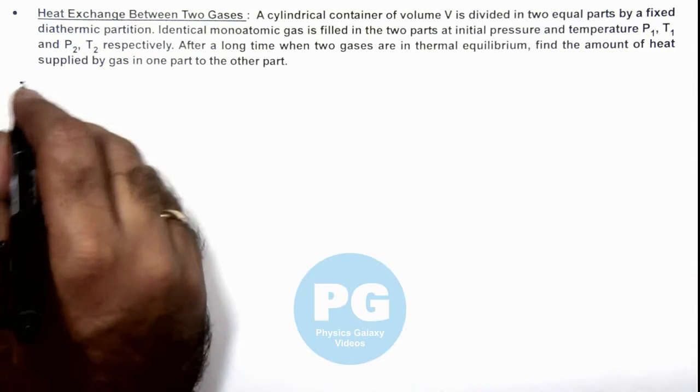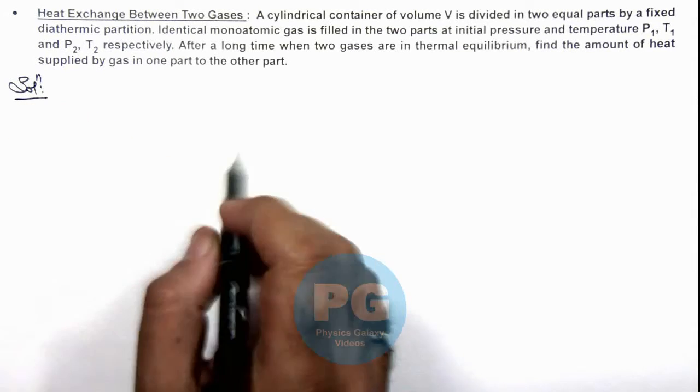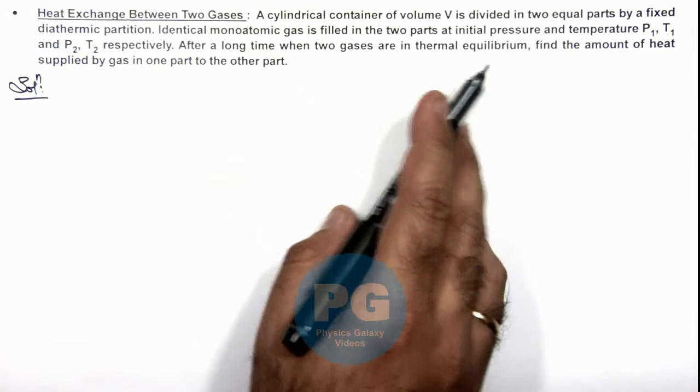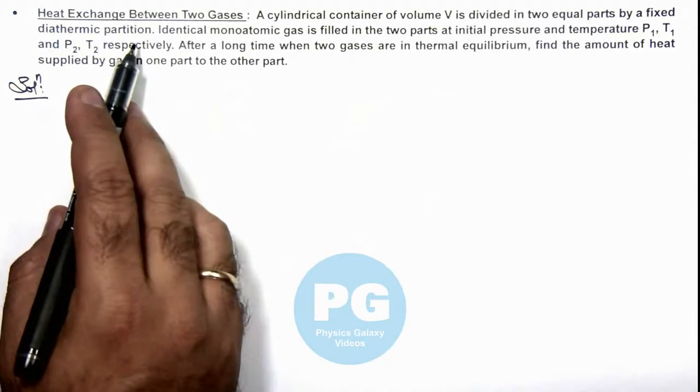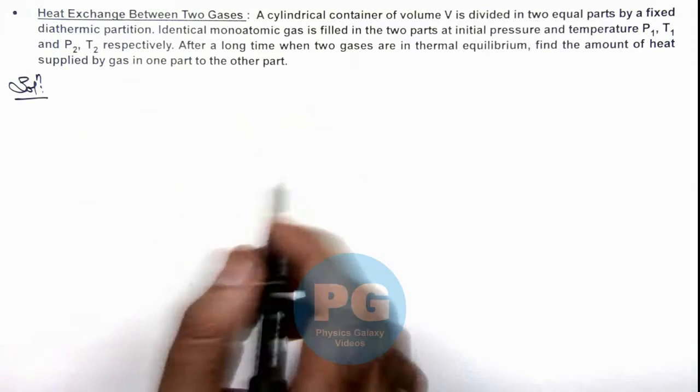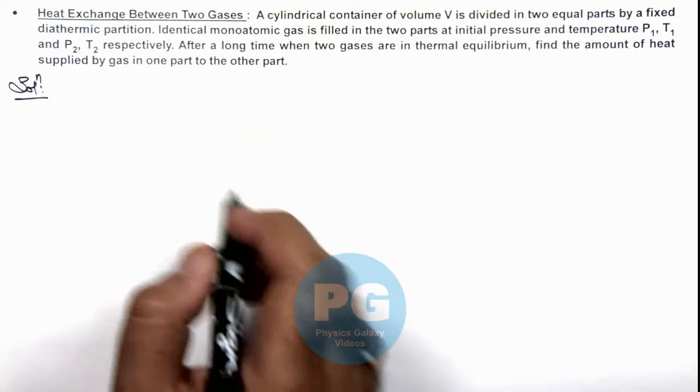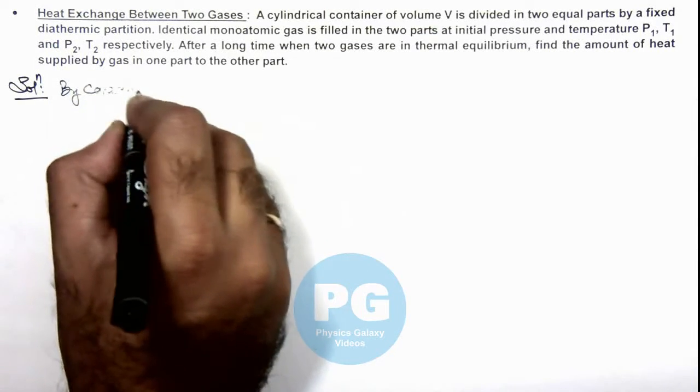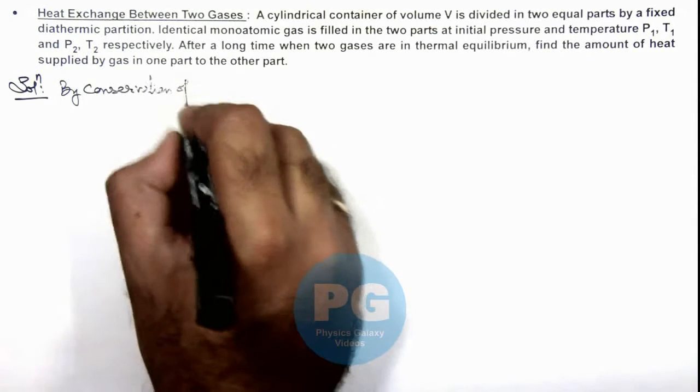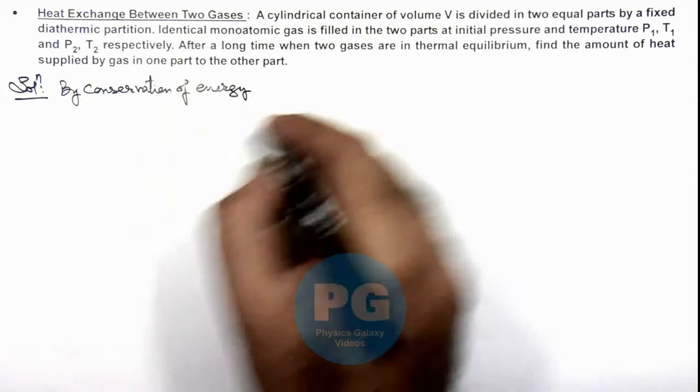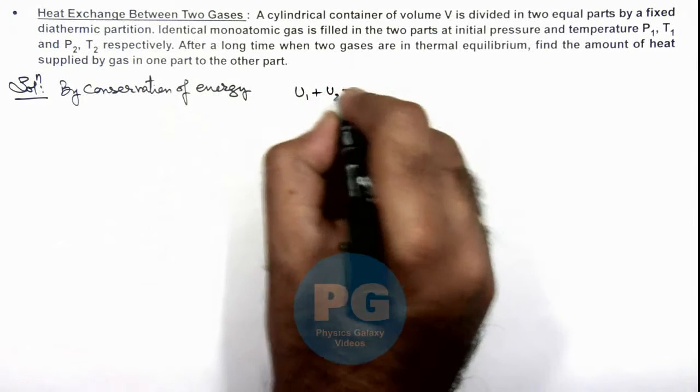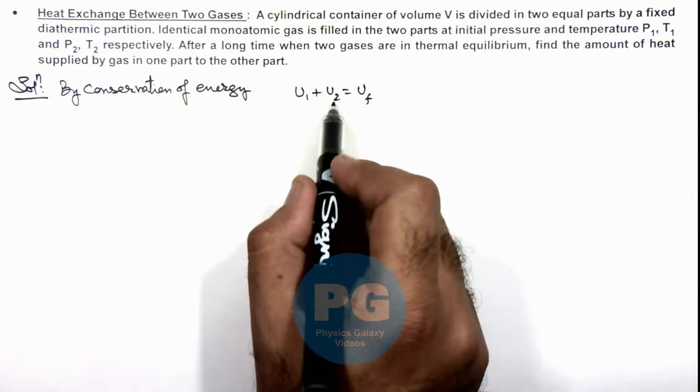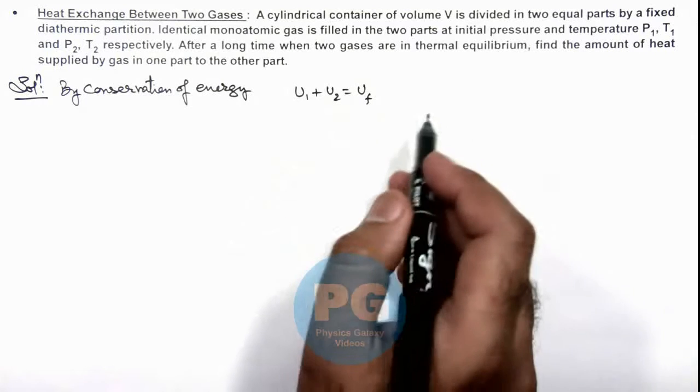In this situation, we can consider that the gases are filled in two parts and they are connected by a diathermic partition. Heat will be exchanged between the two, but total energy of gas remains constant. So we can write by conservation of energy: U₁ + U₂ = U_final, where U₁ and U₂ are the internal energies of the two gases initially and U_final is the final internal energy.